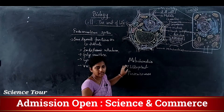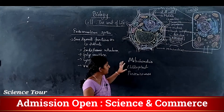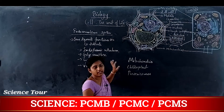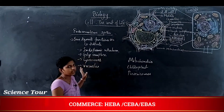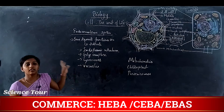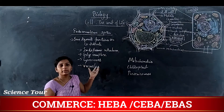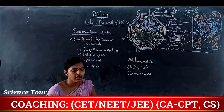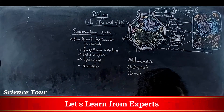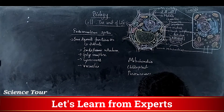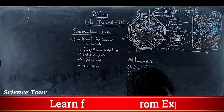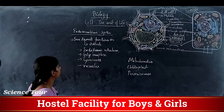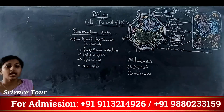Mitochondria, chloroplasts, and peroxisomes are not dependent on any other organelles — they independently carry out their functions, so they are not included under the endomembrane system. In the endomembrane system, the functions are dependent on one another. First, we are going to study about the endoplasmic reticulum.